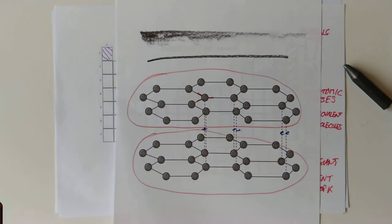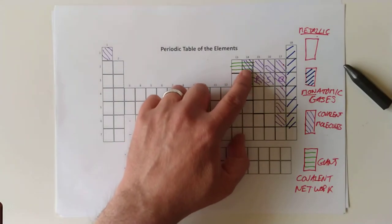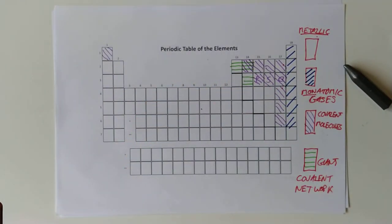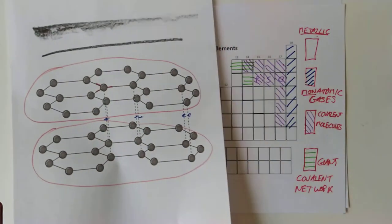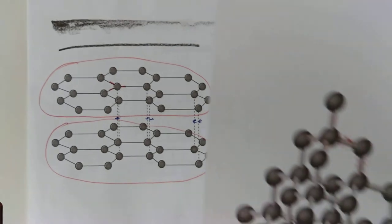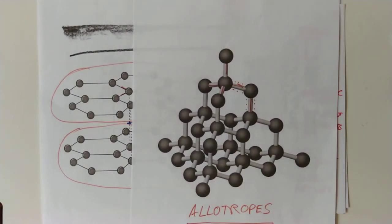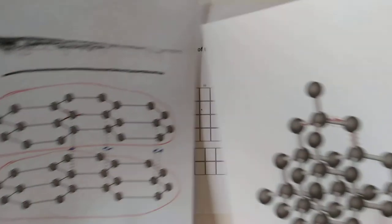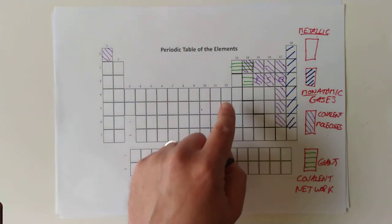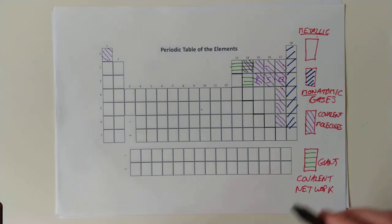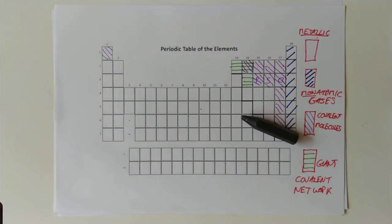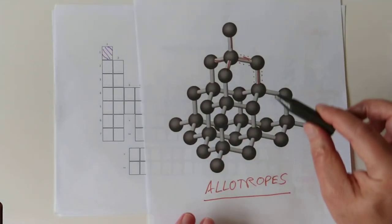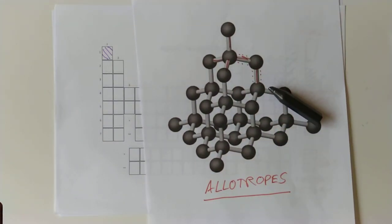So that's all I want to say about giant covalent networks. There are only three elements that do it. You need to know both forms of carbon, actually three forms of carbon in total. We have graphite, we have diamond, and if we flip back to individual molecules for a second, we had Buckminsterfullerene from last time. Properties of these are exactly what you would expect: physically very hard, high melting points, high boiling points, because you're trying to break covalent bonds when you destroy their structure. And that's all, thanks for listening.